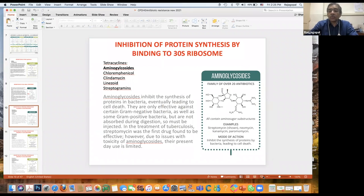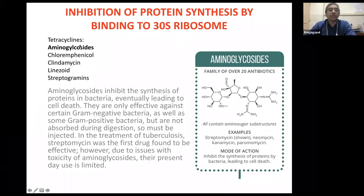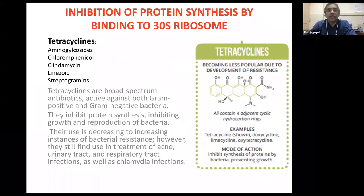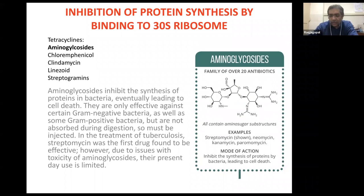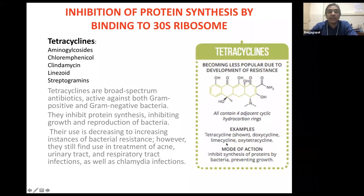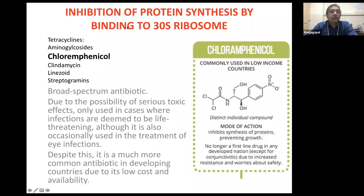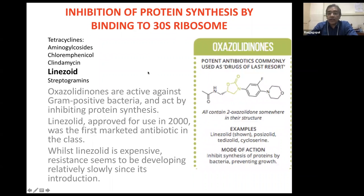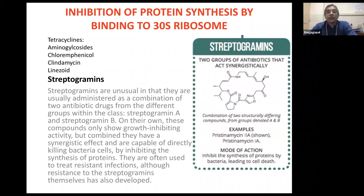Protein synthesis inhibitors include aminoglycosides (streptomycin, neomycin, kanamycin), which affect the 30S ribosome binding site. Tetracycline also affects the 30S ribosome. Chloramphenicol also binds to the 30S ribosome. Linezolid affects a different position on the 30S ribosome. Many of these antibiotics inhibit protein synthesis by binding to the 30S ribosome.